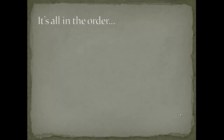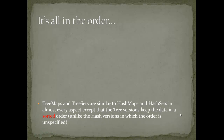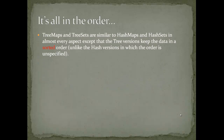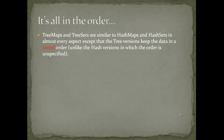Well, it turns out it's literally all in the order. You see, tree maps and tree sets are very similar to hash maps and hash sets in almost every aspect, except that the tree versions keep the data in a sorted order. So tree maps and tree sets always have the data sorted.